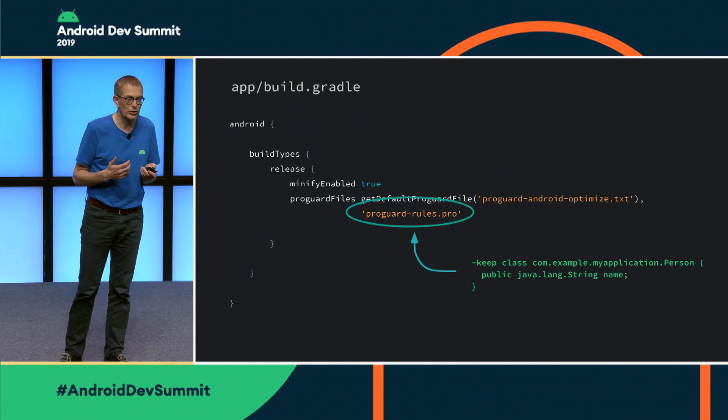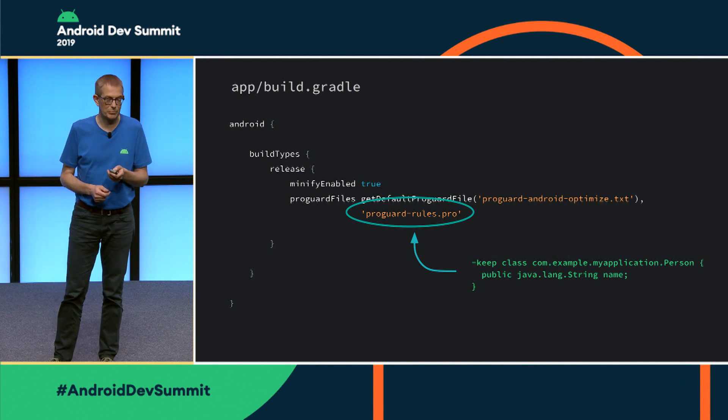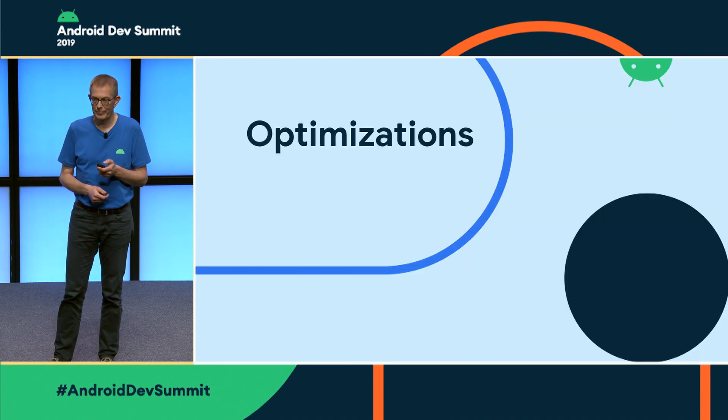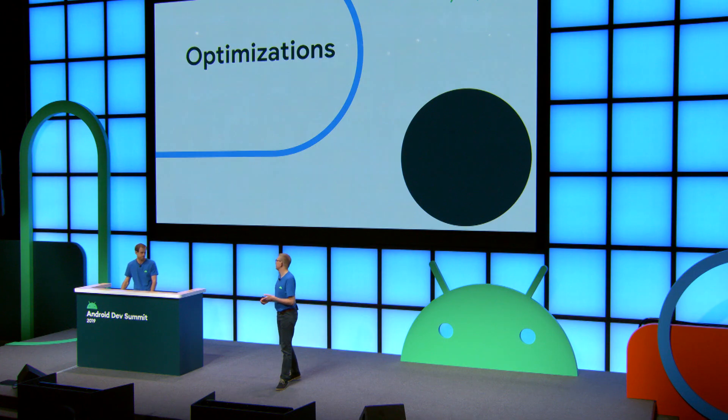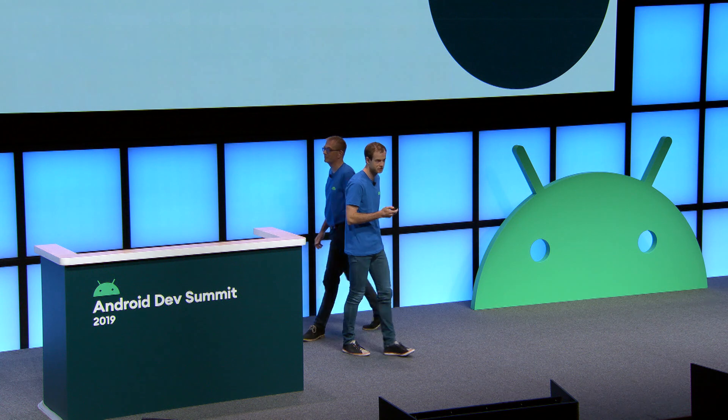These additional keep rules go into a file that you reference from your application's build.gradle file. Now let's take a closer look at some of the optimizations that R8 performs. R8 consists of many different optimizations, and it turns out that a few of these are responsible for the majority of code size reductions. Key optimizations include minification, which gives shorter names to identifiers such as class names; method inlining, which often removes many method definitions since many methods are only used in a few places; and tree shaking, which removes unused code.